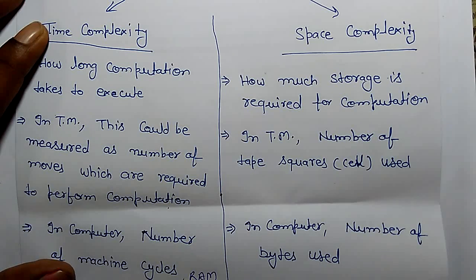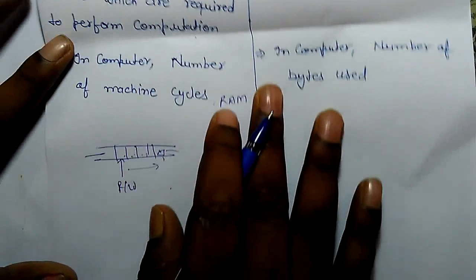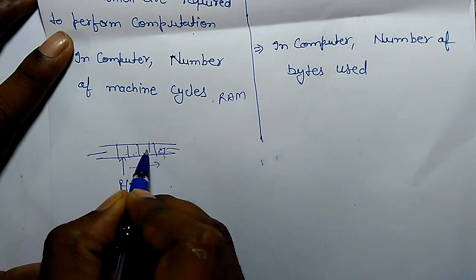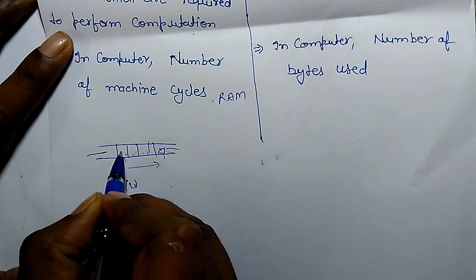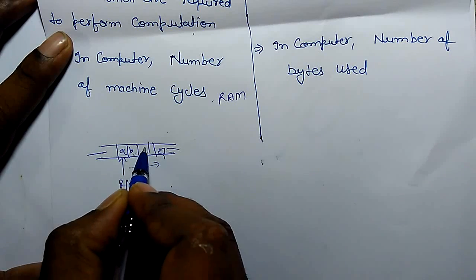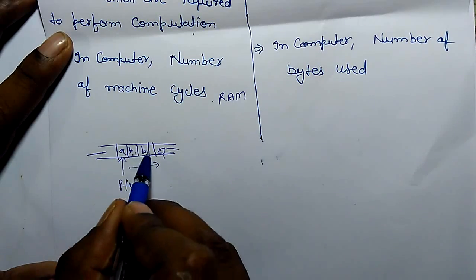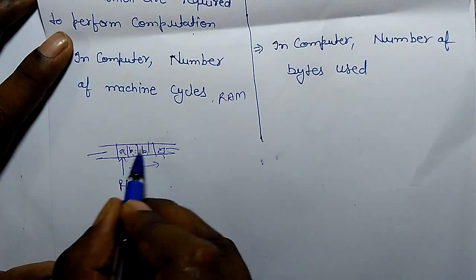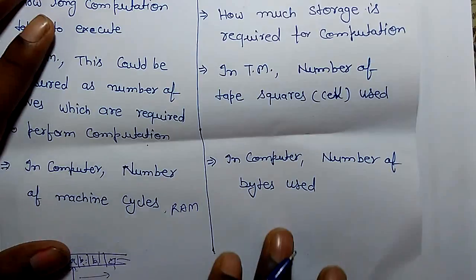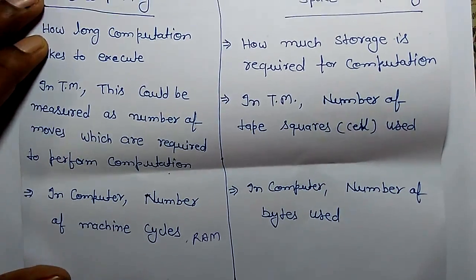In a Turing machine, space complexity is measured by the number of tape squares used. We represent these squares as storage where we put sigma values such as A, B. The total number of squares or cells used for running an algorithm is space complexity.